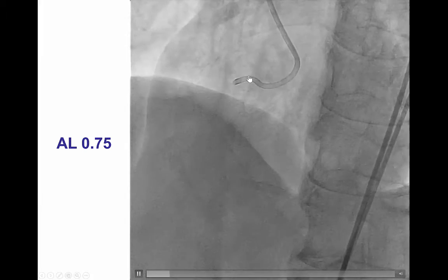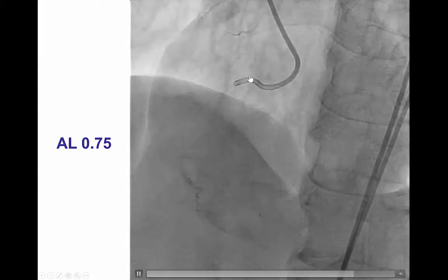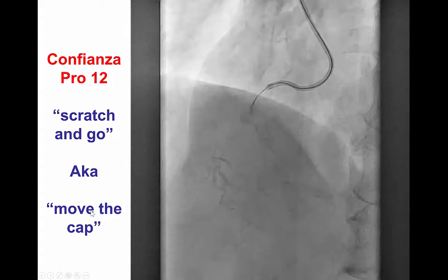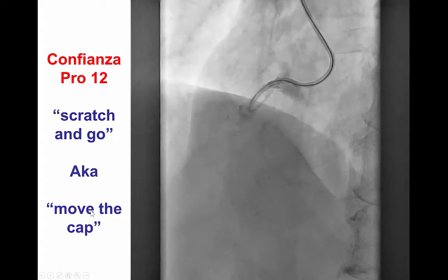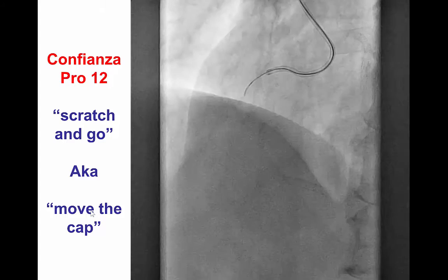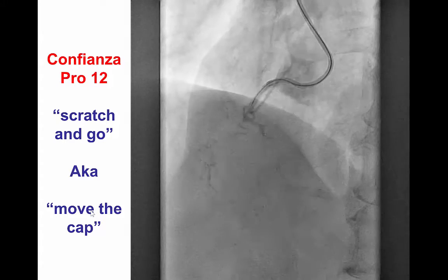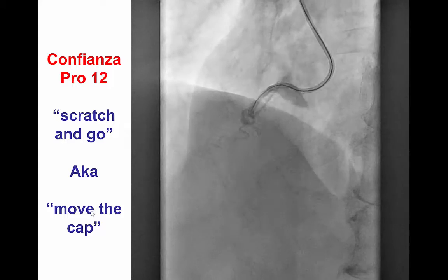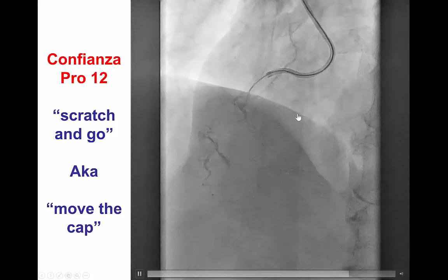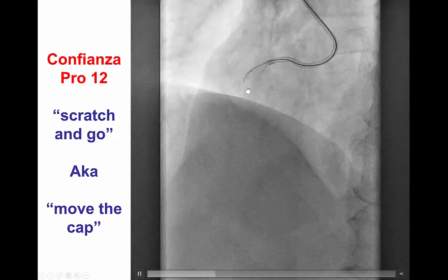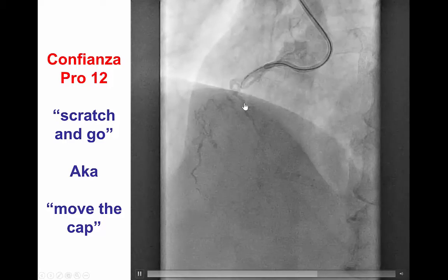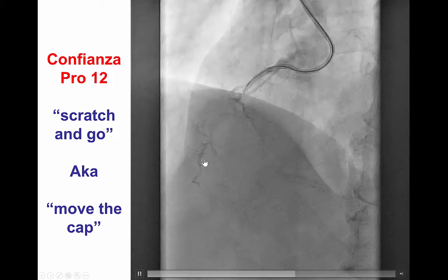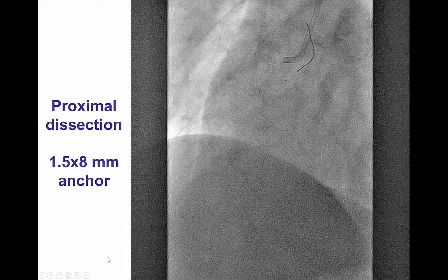We used various guides for challenge with guide catheter support — this is an AL.75. Given the inability to clarify the ambiguity using various projections, we used a technique called the scratch-and-go technique, in which we intentionally cause a dissection in the vessel proximal to the occlusion so that we can access the sub-intimal space and then cross the CTO in the sub-intimal direction.